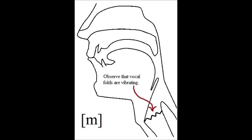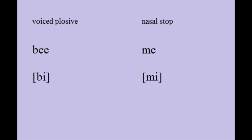Nasal stops involve air flow that is completely stopped along the oral tract but with the velum lowered, allowing passage of air flow through the nasal cavity. Compare the English words 'be' and 'me'. 'Be' begins with an oral stop or a plosive. 'Me' begins with a nasal stop.